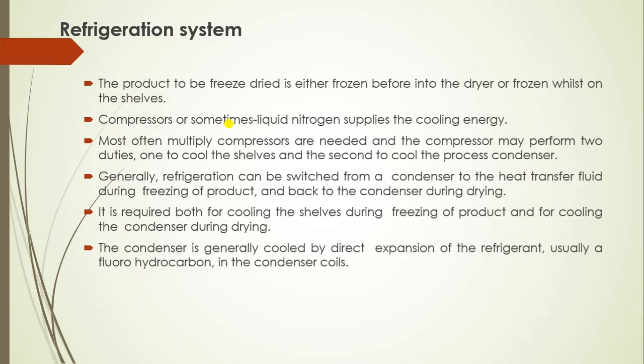Next is the refrigeration system. The product to be freeze dried is either frozen before loading into the dryer or frozen while on the cells. A compressor, or sometimes liquid nitrogen, supplies the cooling energy. Most often, multiple compressors are needed and a compressor may perform two duties: one to cool the cells and second to cool the process condenser. Generally, refrigeration can be switched from the condenser to the heat transfer fluid during freezing of the product and back to the condenser during drying. The condenser is generally cooled by direct expansion of refrigerant like fluorohydrocarbon in the condenser coil.